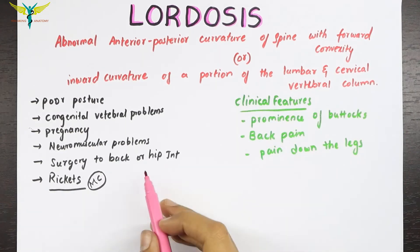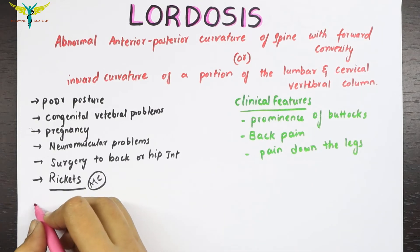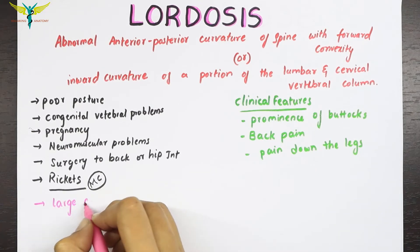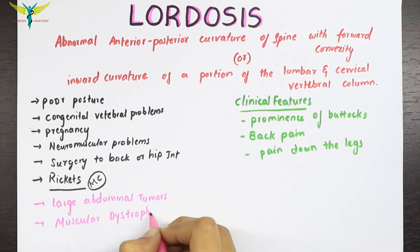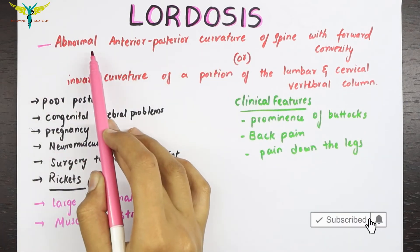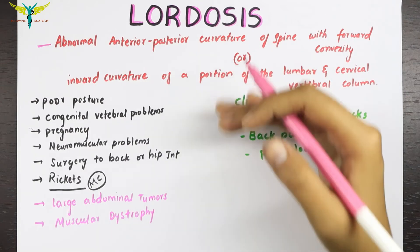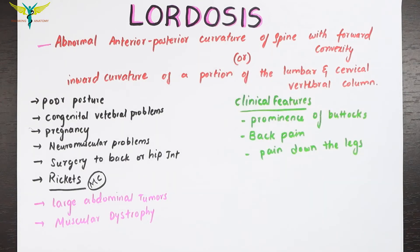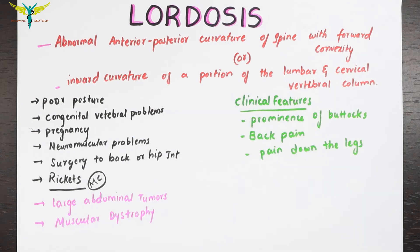Lordosis can also be seen in large abdominal tumors and in cases of muscular dystrophy. In summary, lordosis is an abnormal anterior-posterior curvature of the spine with forward convexity, or the inward curvature of a portion of the lumbar or cervical vertebral column.